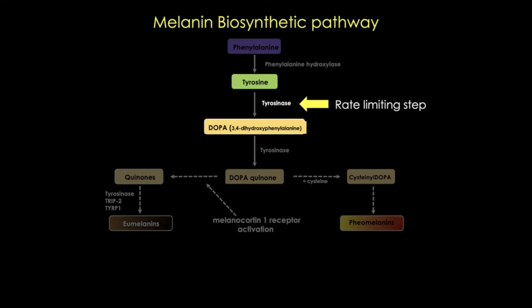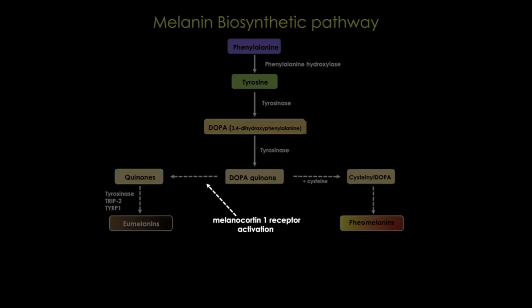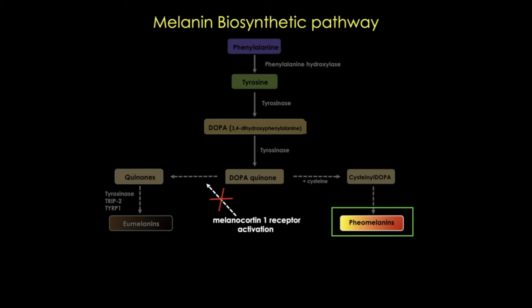The biosynthetic pathways for eumelanin and pheomelanin diverge downstream of DOPA. The choice of pathway is determined by the signaling activity of the melanocortin receptor. The melanocortin receptor controls which type is made—when we block this receptor or its signaling pathway, we get pheomelanin.